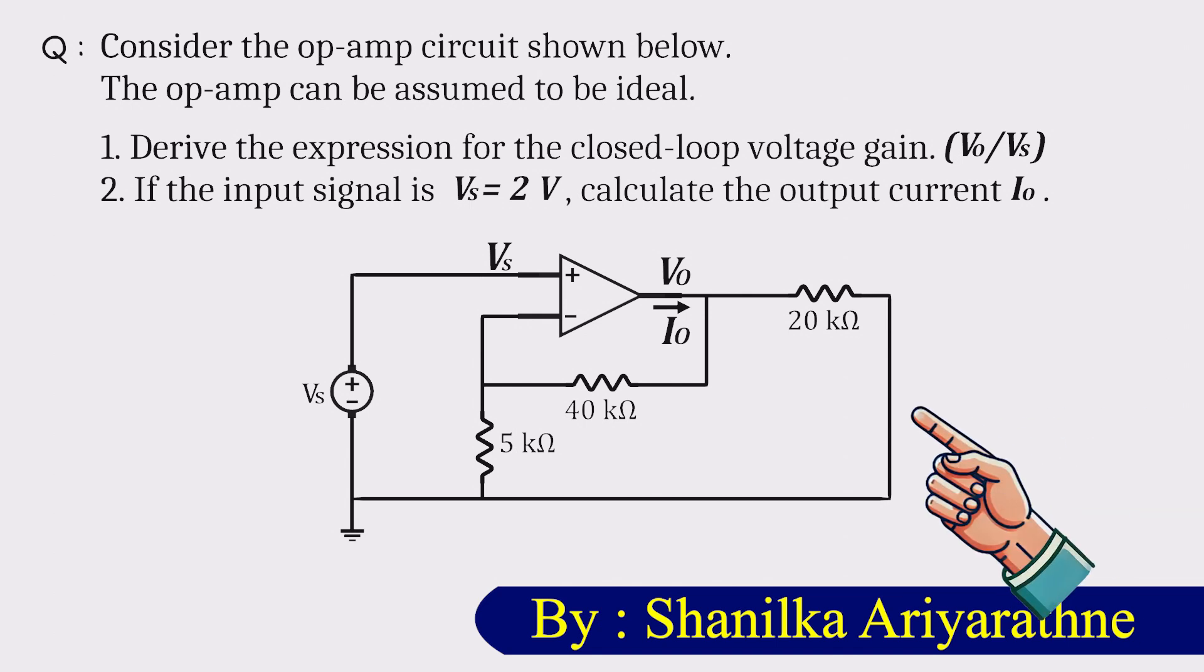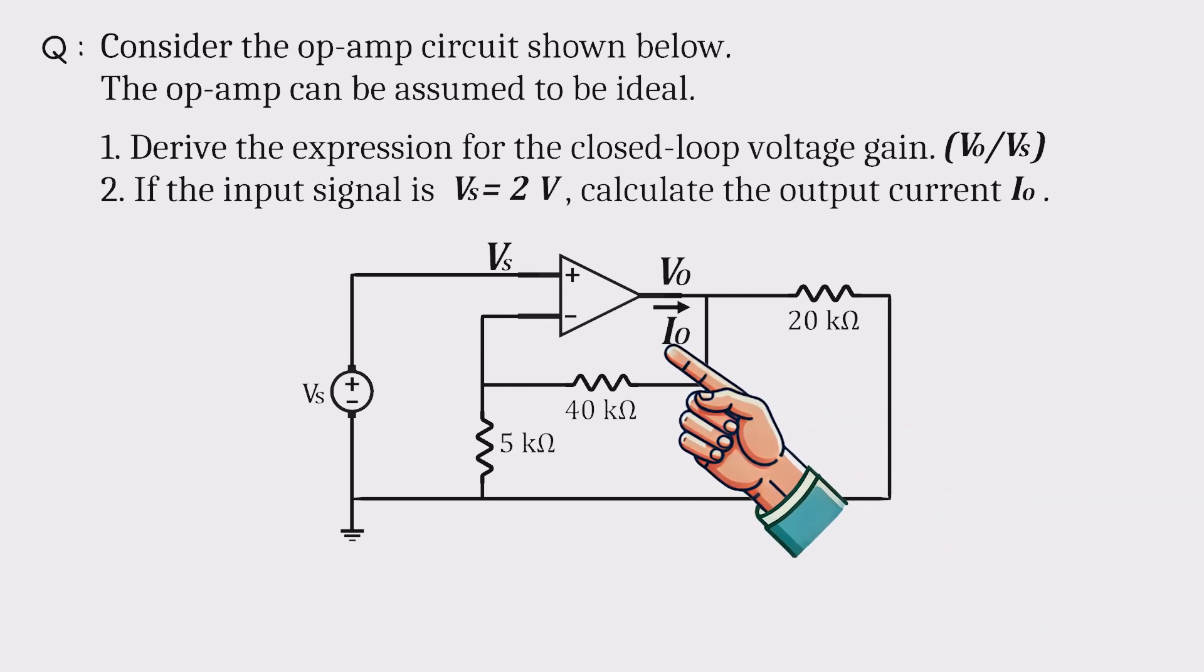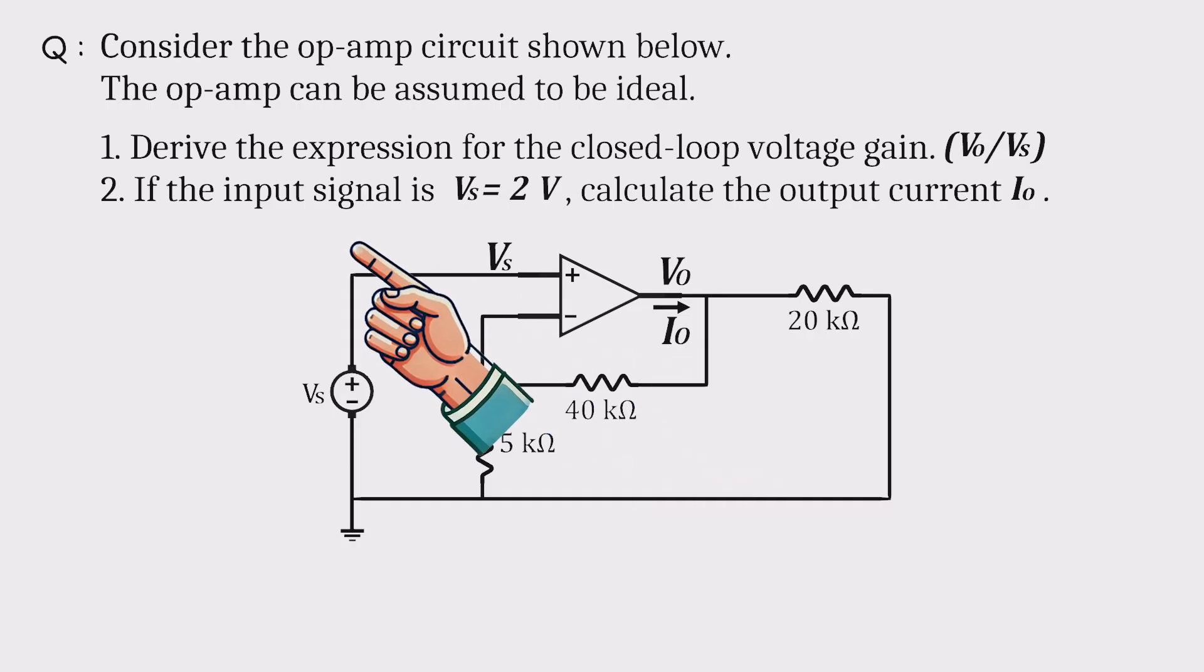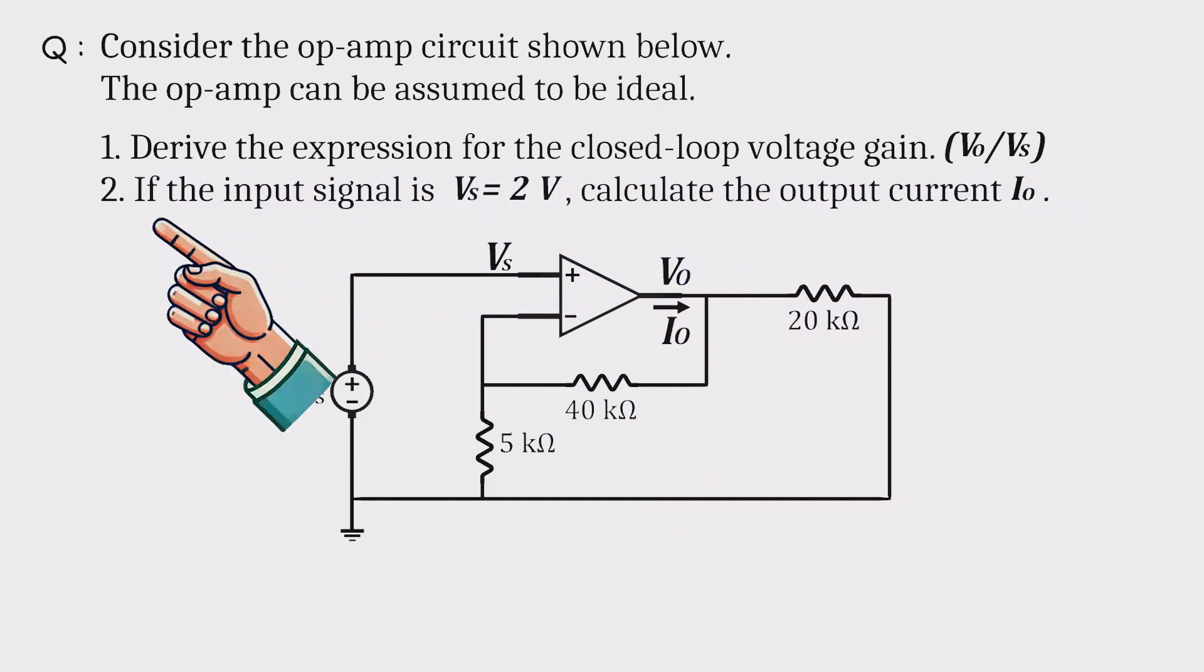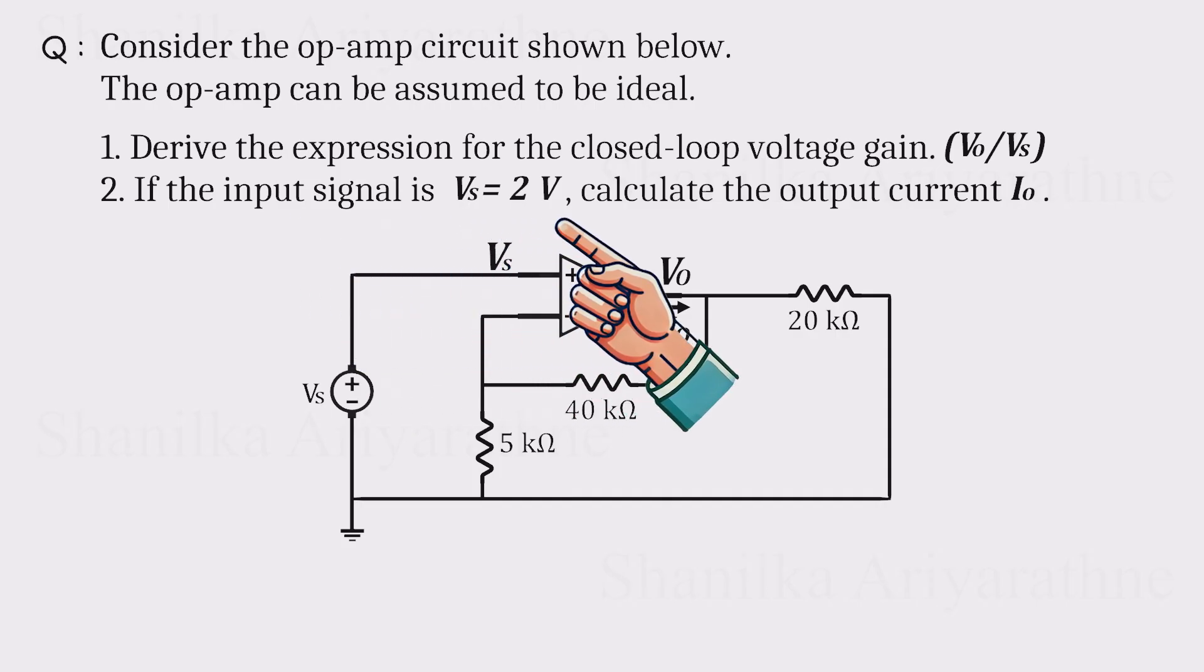Consider the op-amp circuit shown here. We're told the op-amp is ideal. Our job has two parts. First, derive the closed-loop gain. Then, if the input is 2 volts, find the output current.